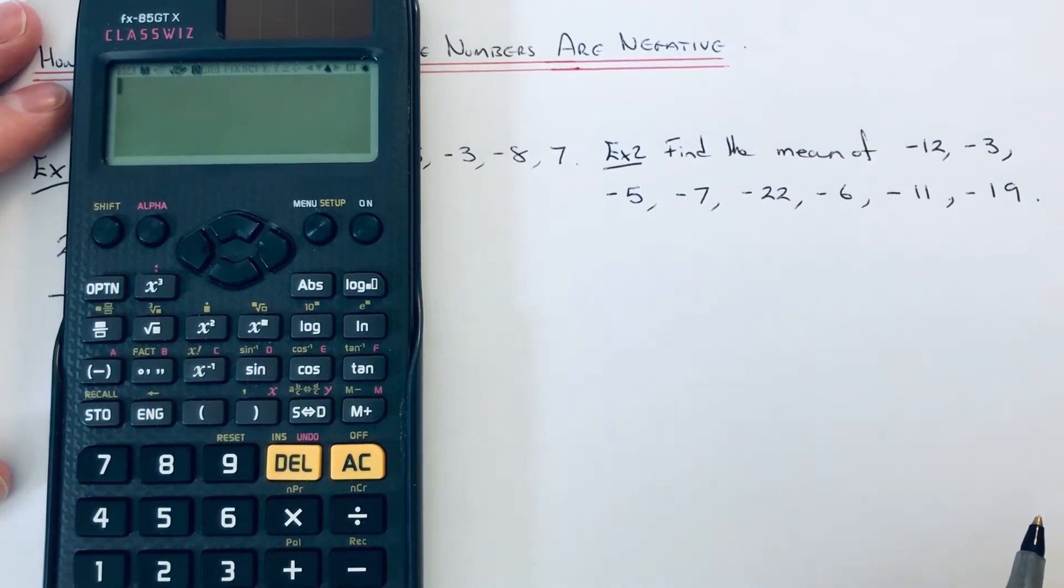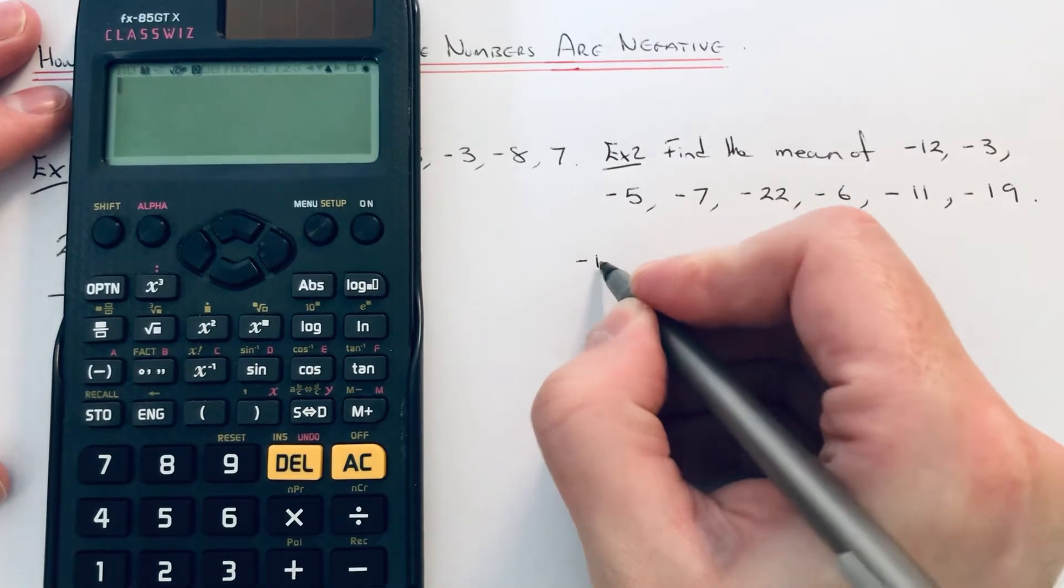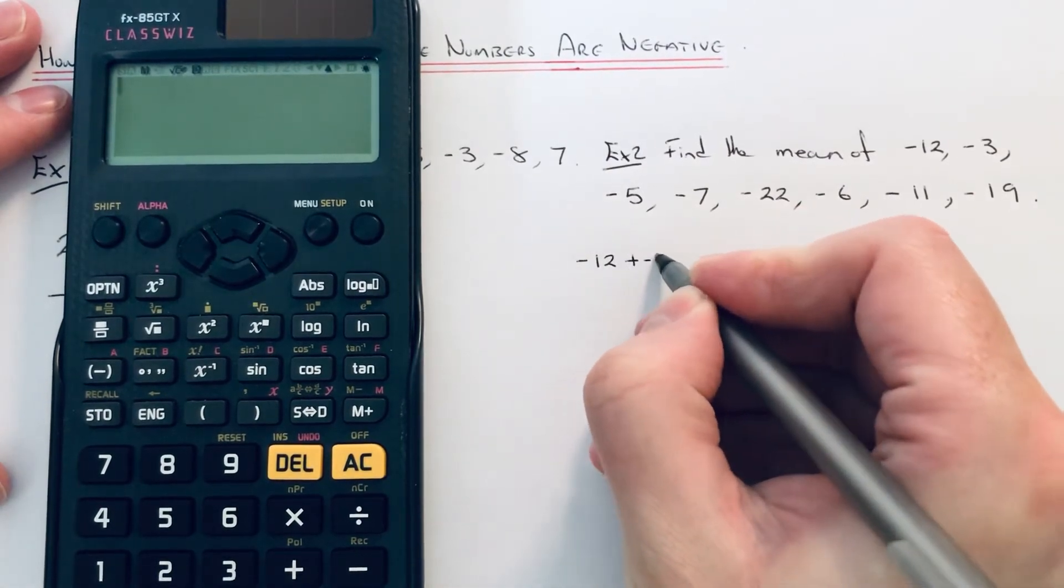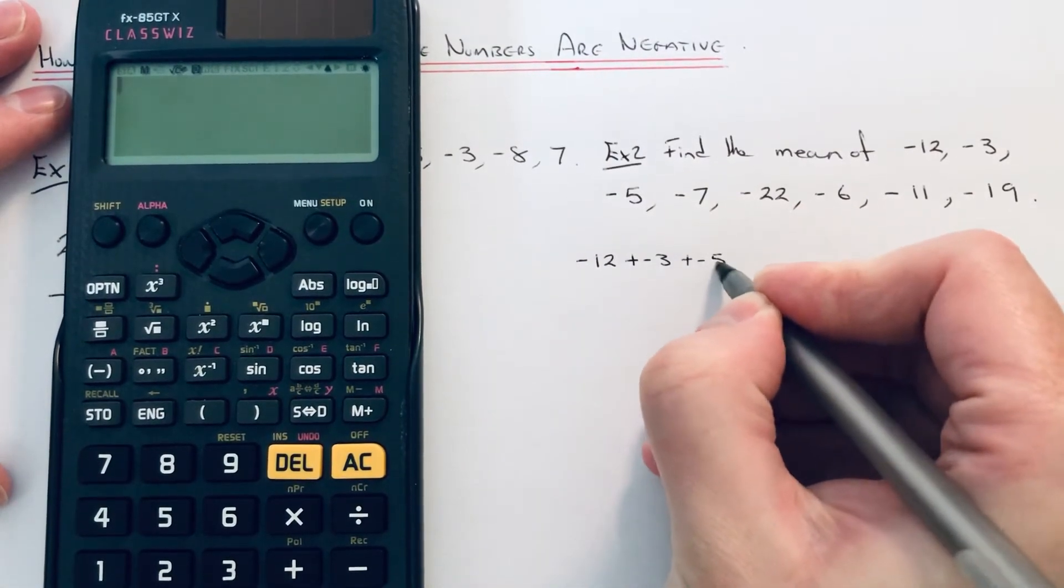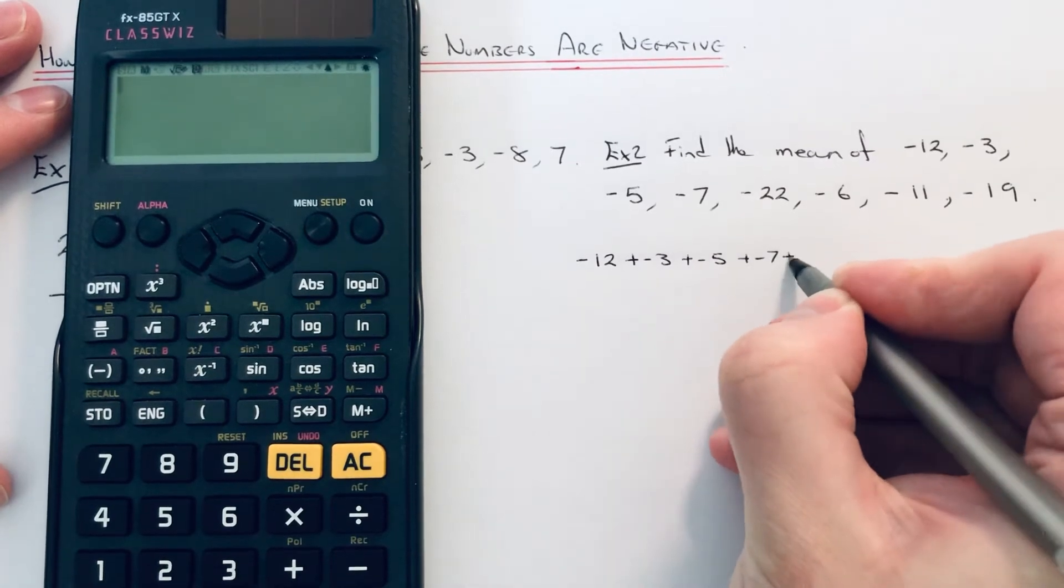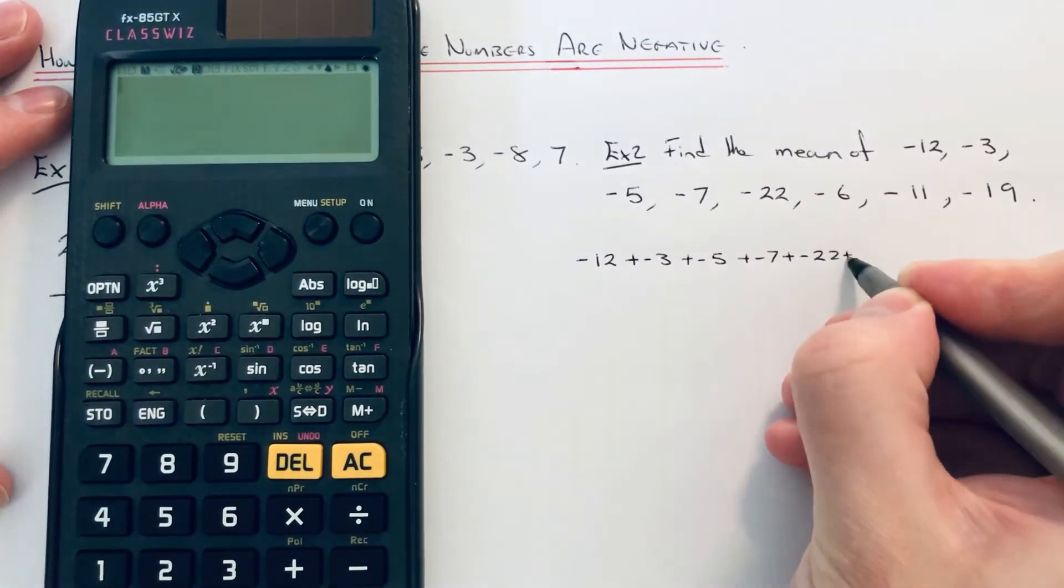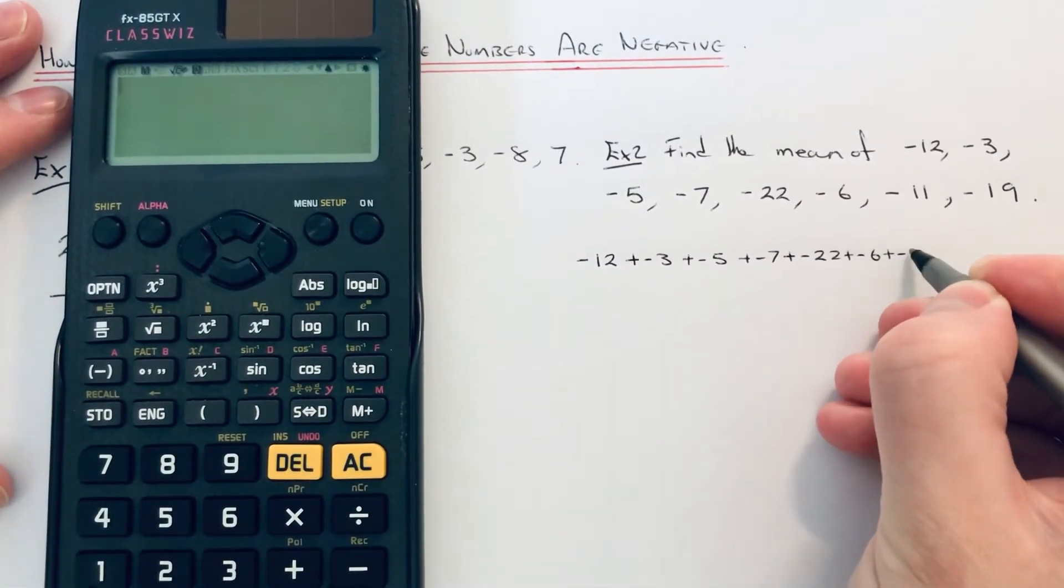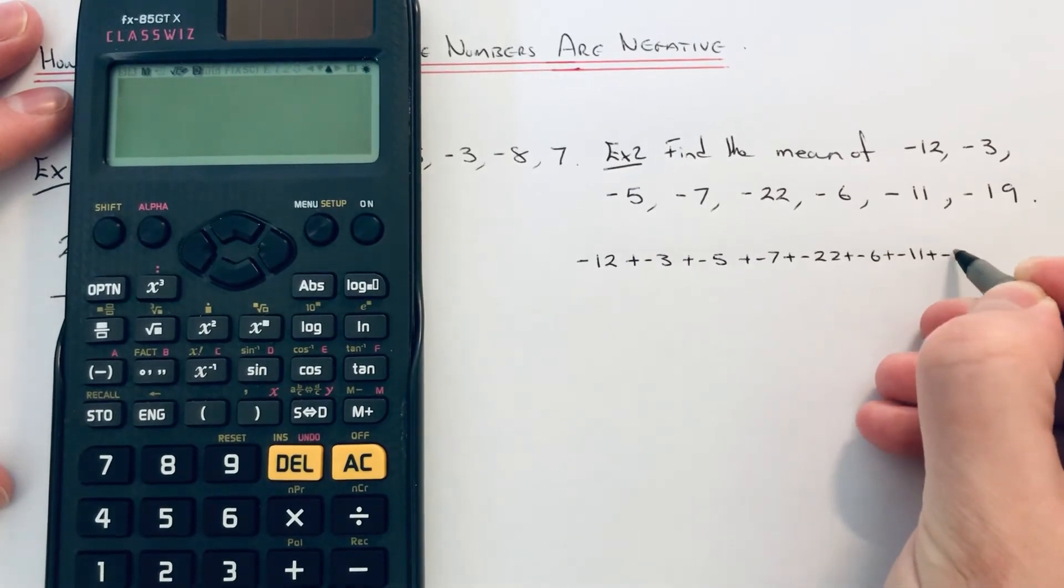We've got all negative numbers this time. So again, we just add these negative numbers up. So we've got minus 12, add minus 3, add minus 5, add minus 7, add minus 22, add minus 6, add minus 11, add minus 19.